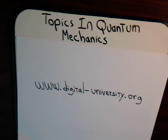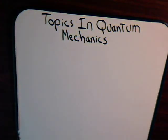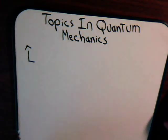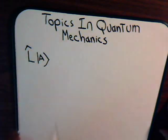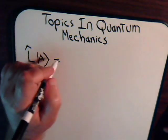This is video number four from digital-university.org concerning various topics in quantum mechanics. In this video we want to take a look at the operator adjoint, and then that will segue us into the Hermitian operator. To get us started, let's suppose that we have a linear operator L, and it operates on a particular ket vector A. When it does that, it transforms it into a different ket vector, we'll call that C.